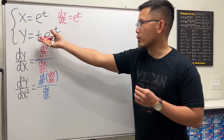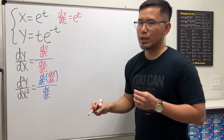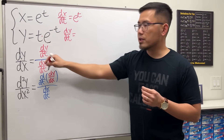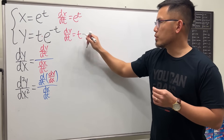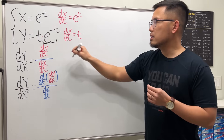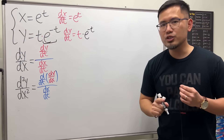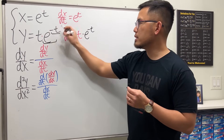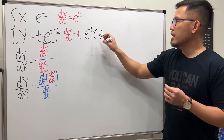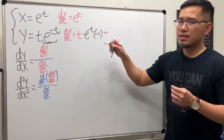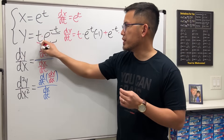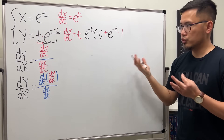Now do the same thing for the y equation. We need the product rule here. dy/dt will be: keep the first function, which is t, and multiply by the derivative of the second. The derivative of e to the negative t is e to the negative t — don't forget the chain rule — multiplied by the derivative of negative t, which is negative 1. Then add the second function, e to the negative t, times the derivative of the first, which is just 1.